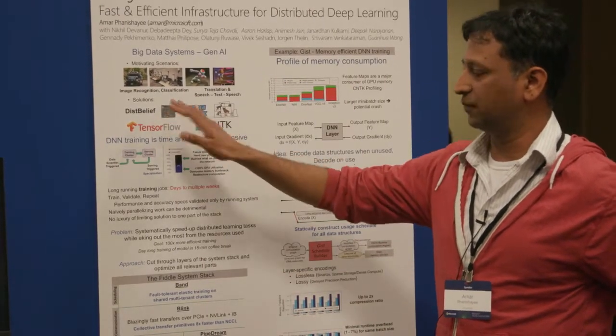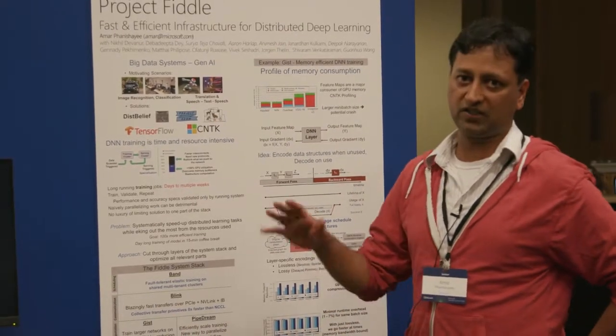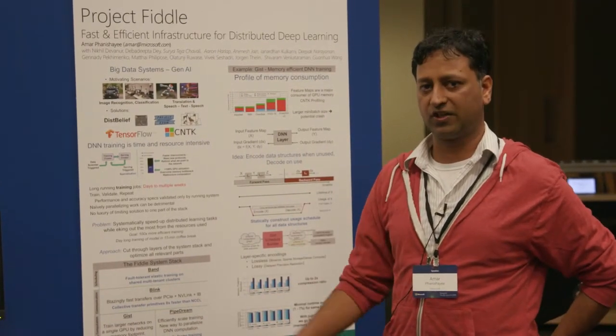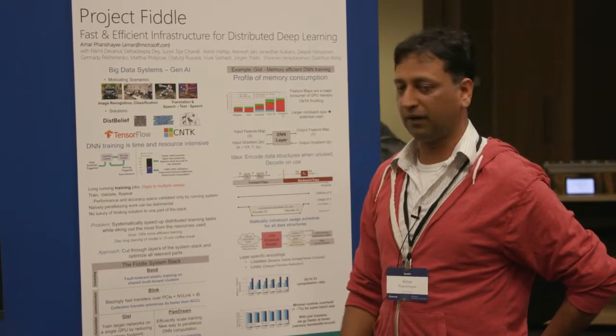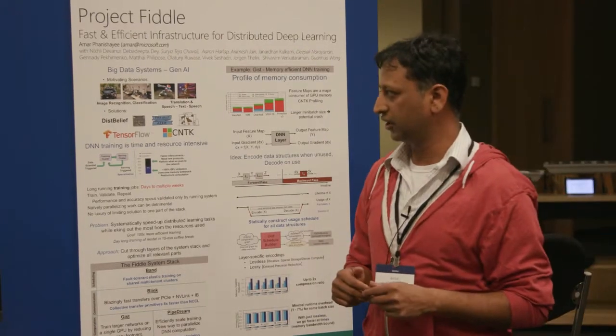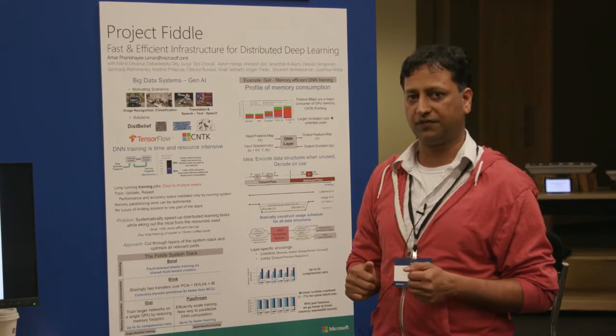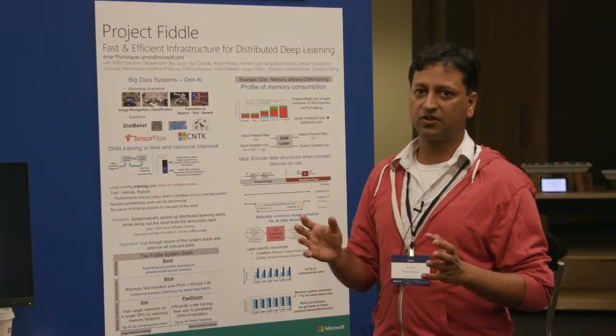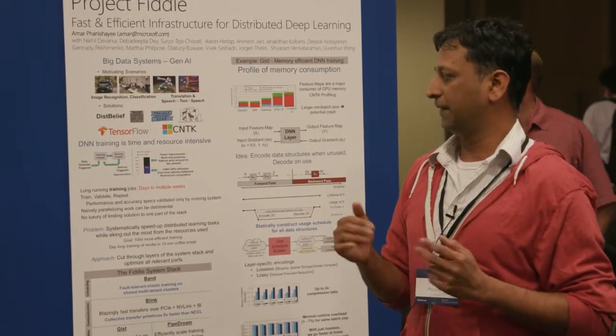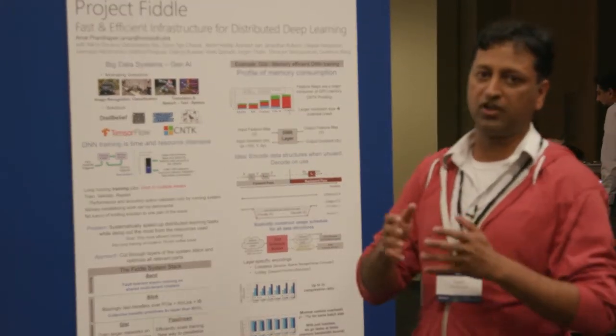We have applications such as image recognition, classification, translation, and speech to text and text to speech conversion. There have been various solutions proposed over the years. The first generation of solutions like DistBelief and Project Adam looked at using commodity computers to solve some of these problems using DNNs. The next generation of systems like TensorFlow and Microsoft CNTK were generalizations that let programmers specify how to code up these DNNs and solve many of these tasks as opposed to point solutions for specific tasks.